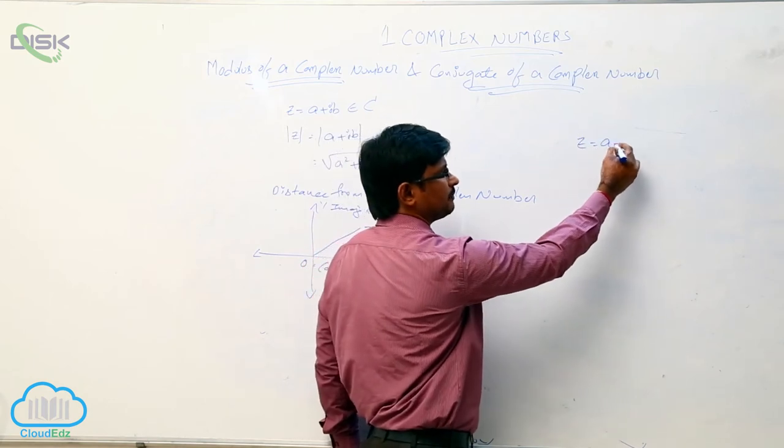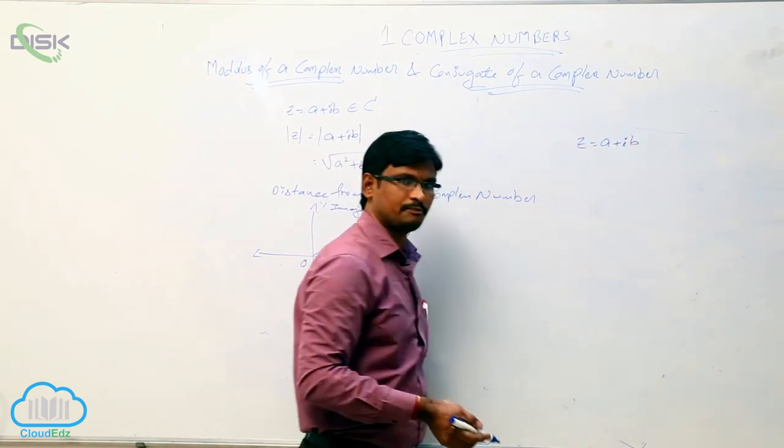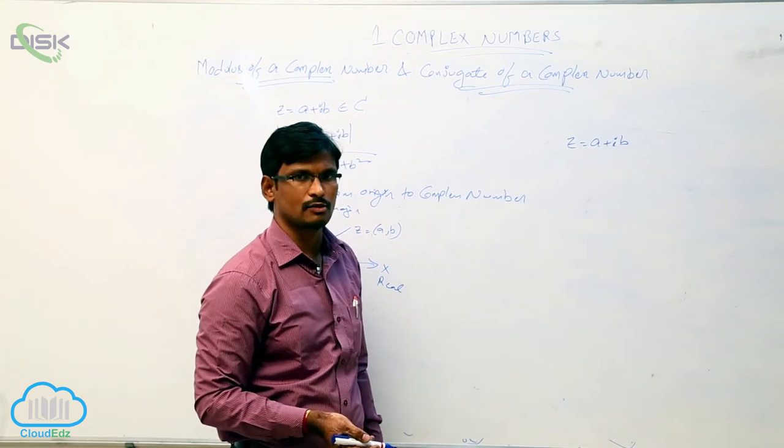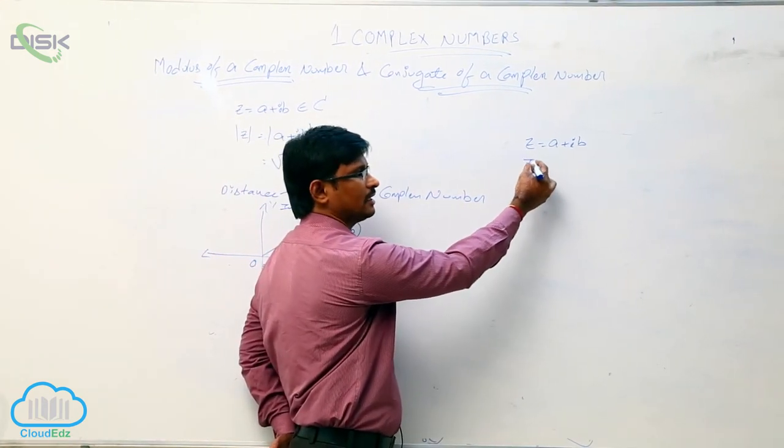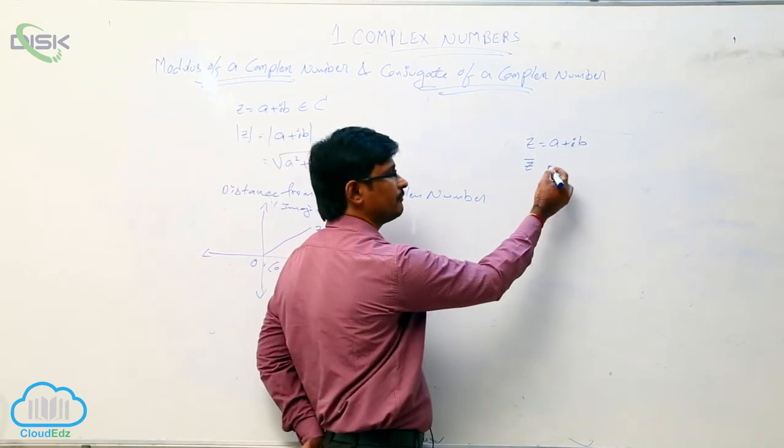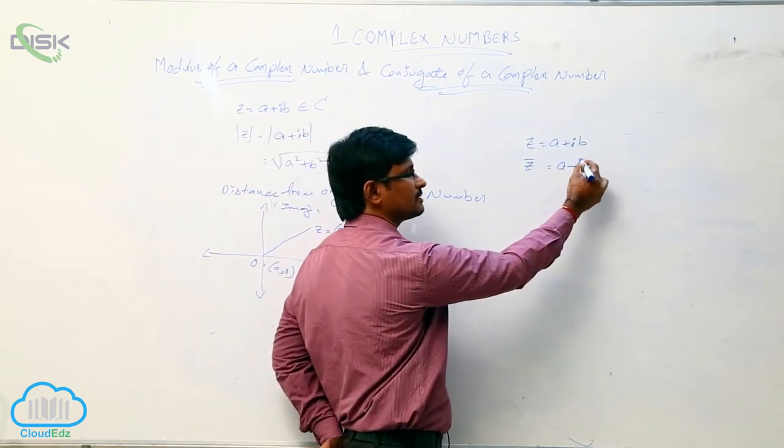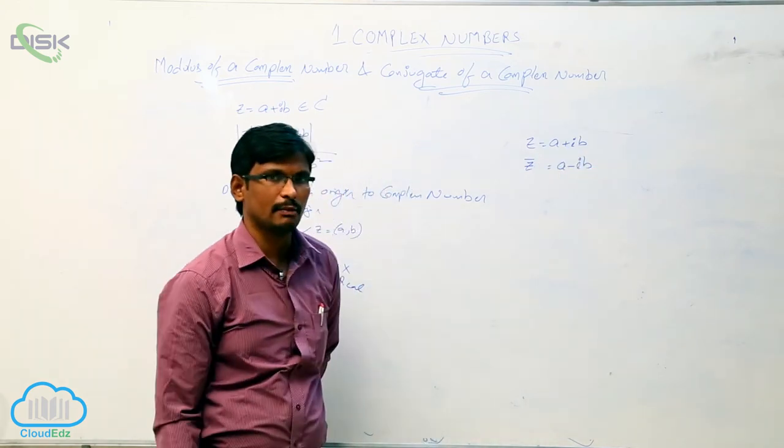If z equal to a plus ib is one complex number, then conjugate of this complex number is denoted by z bar and is defined as a minus ib.